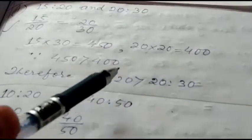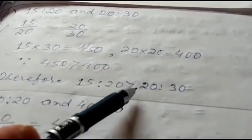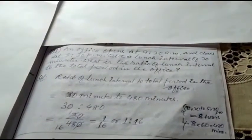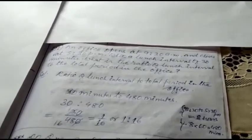One more: an office opens at 9:30 AM and closes at 5:30 PM with a lunch interval of 30 minutes. What is the ratio of lunch interval to the total period in the office?